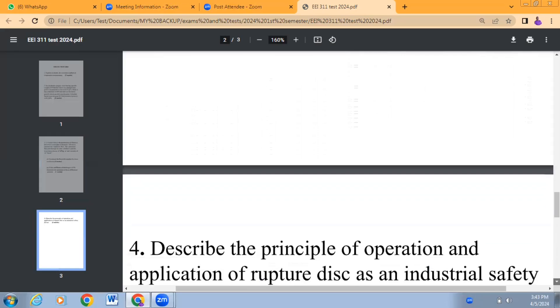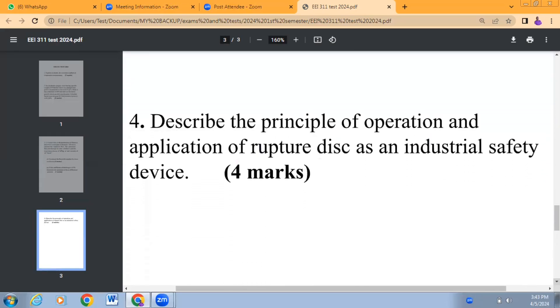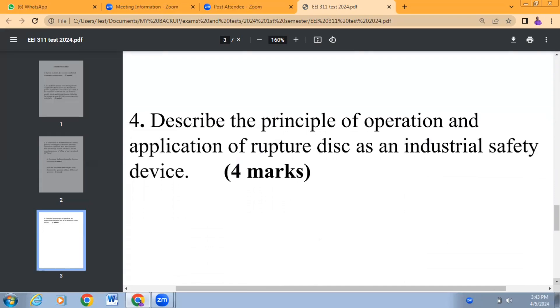We move on to problem number four. Describe the principle of operation and application of ruptured disc as an industrial safety device. We have several devices installed in industries to protect life and materials, protect personnel, protect the environment, and prevent disaster from happening - prevent a lot of hazards from causing harm. One of them is the ruptured disc. Here we want you to describe the principle of operation of the ruptured disc as well as its application as an industrial safety device. This is another four points. If you check through, you realize that all the points for the four problems here is only 20 marks.